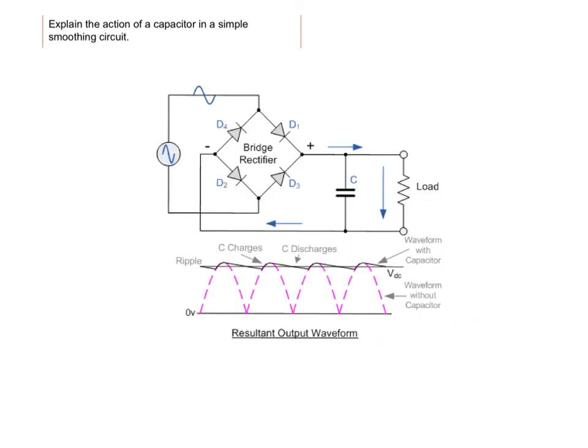Here we have our circuit again. We have our bridge in the middle — look at how the diodes are arranged. But we also have something extra: a component here. That's a capacitor. And you need, for an A grade, to explain the action of a capacitor in a simple smoothing circuit.